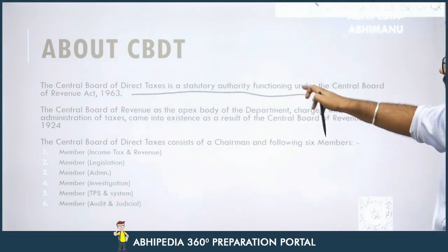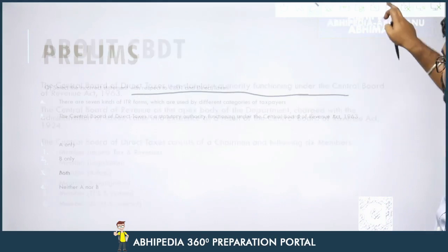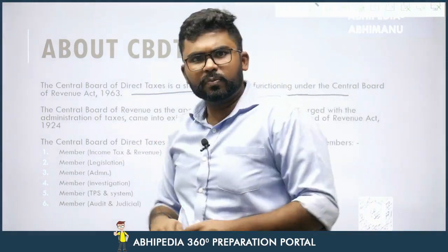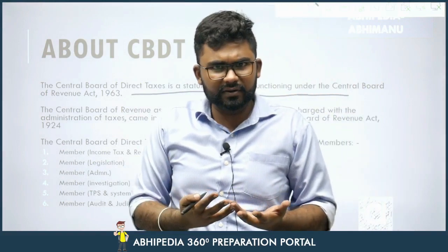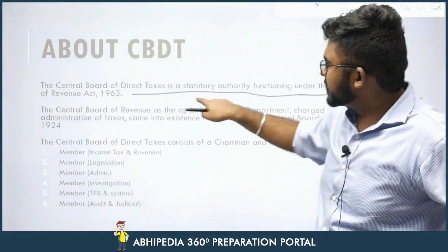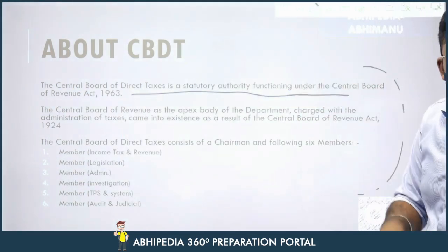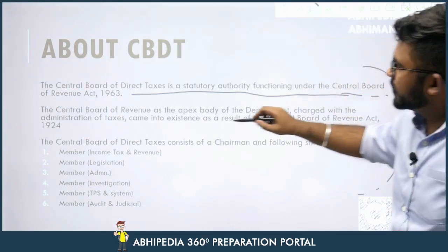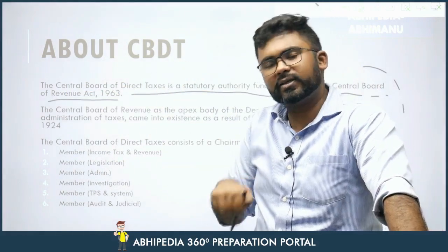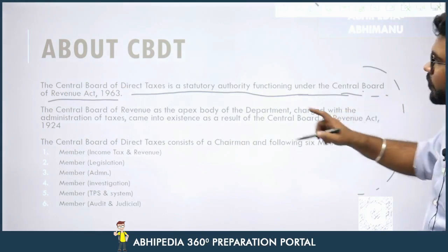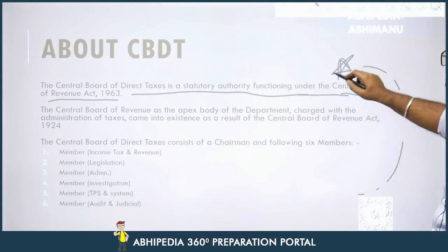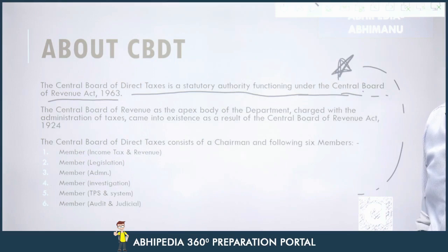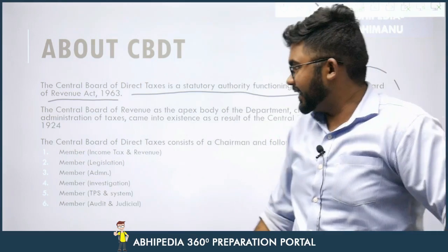CBDT is a statutory body. Let us look briefly at what CBDT is. The Central Board of Direct Taxes is a statutory authority functioning under the Central Board of Revenue Act. Since changes have been proposed and this is in the news, this is something we need to remember. The Central Board of Revenue Act, 1924, established it as the apex body of the department charged with the administration of taxes. The relevant act for its statutory authority is the Central Board of Revenue Act, 1963.